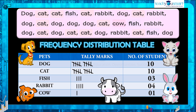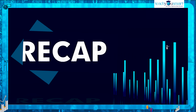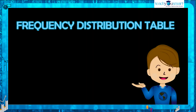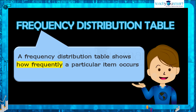Using this table, we can easily answer the questions related to this. Let's have a quick recap. Today we learned about the frequency distribution table. A frequency distribution table shows how frequently a particular item occurs in a group.